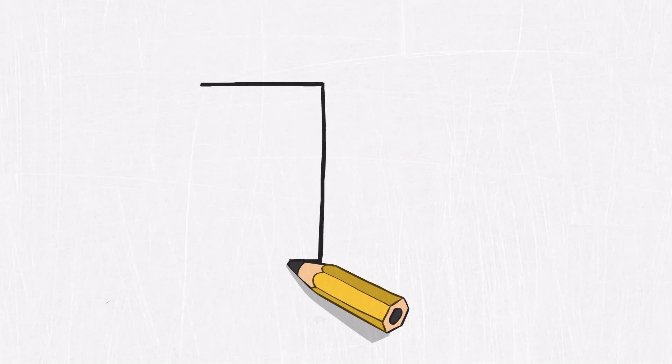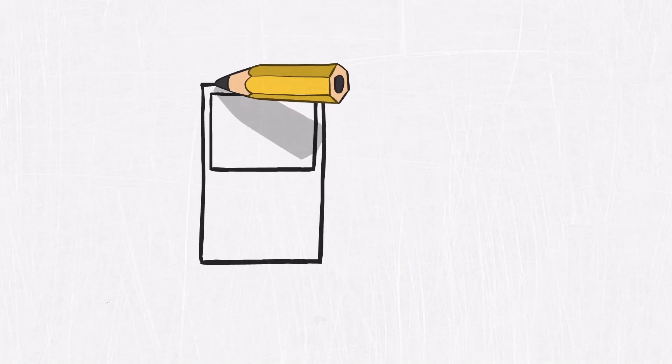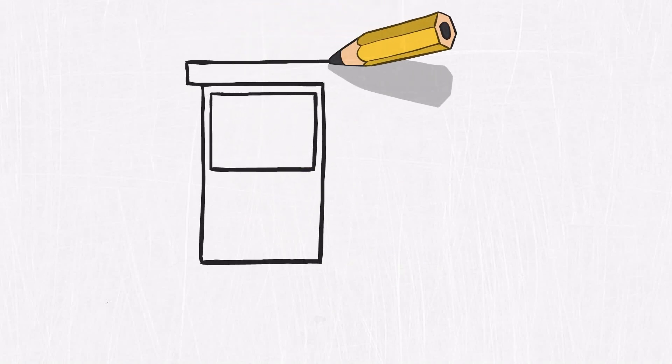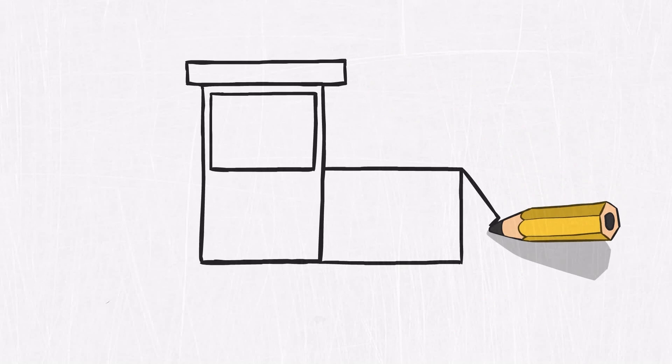First of all, let's draw a large rectangle. Then a small rectangle inside it. It's a window. Let's draw the roof. Then draw a rectangle in front. The engine will be hidden here. In order that our train goes faster, let's draw a triangle.